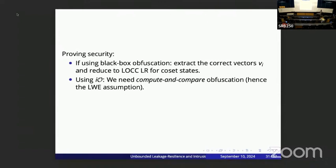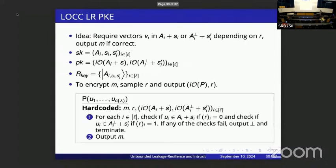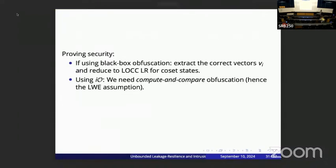This naturally reduces to the leakage resilience property for coset states, at least in the black-box oracle model for the ciphertext programs. We need to do more work for the cryptographic version where we assume indistinguishability obfuscation instead of black-box obfuscation.